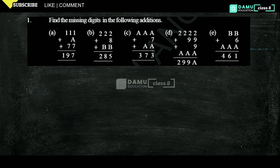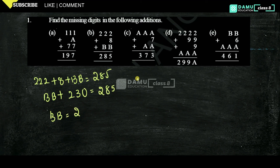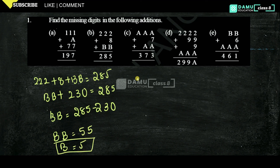Problem B: 222 plus A plus BB equals 285. Using the normal method: 222 plus 8 plus BB equals 285. Then BB plus 222 plus 8 becomes 230, which equals 285. So BB equals 285 minus 230, giving BB equals 55, meaning B equals 5. This is one method.